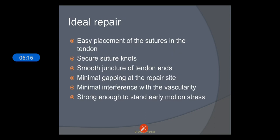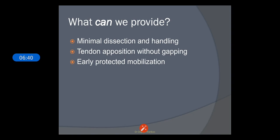The ideal repair involves easy placement of sutures in the tendon, secure suture knots, smooth junctures of tendon ends, minimal gapping at the repair site, minimal interference with the vascularity of the tendons, and sufficient strength to withstand early motion stress. This can be achieved through minimal dissection and handling, tendon opposition without gapping, and early protected mobilization.